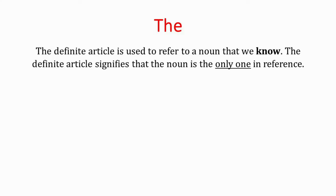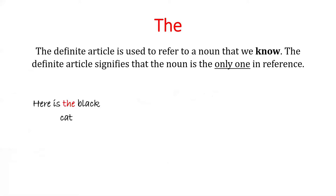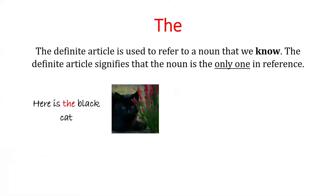Let's start with the word 'THE'. The definite article is often misused because in translation into other languages, articles are used quite differently. So let's look at how we use this word in English correctly. The definite article is used to refer to a noun that we know — it signifies that the noun is the only one in reference. For example: 'Here is THE black cat.' It's only one cat; 'THE' indicates there is only one black cat.